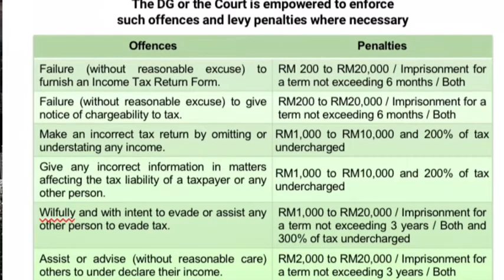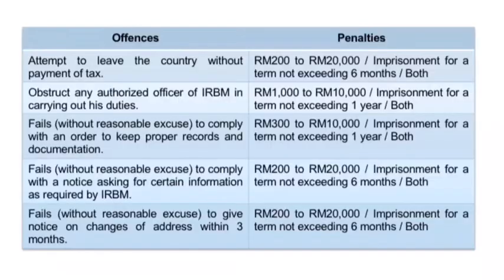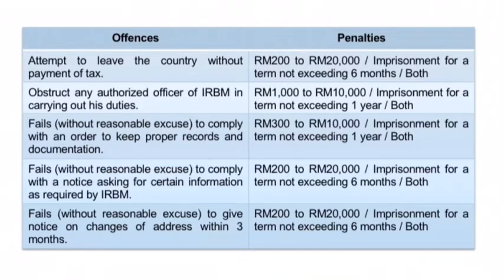Next is the offense of assisting or advising without reasonable care others to under-declare their income — they have to pay penalties of RM2,000 to RM20,000 or imprisonment for a term not exceeding 3 years, or both. The next offense is the attempt to leave the country without payment of tax — that person has to pay penalties of RM200 to RM20,000 or imprisonment for a term not exceeding 6 months, or both. There is also a related offense carrying penalties of RM1,000 to RM10,000 or imprisonment for a term not exceeding 1 year, or both. Next is failure without reasonable excuse to comply with an order to keep proper records and documentation — that person has to pay penalties of RM200 to RM10,000 or imprisonment for a term not exceeding 1 year, or both.